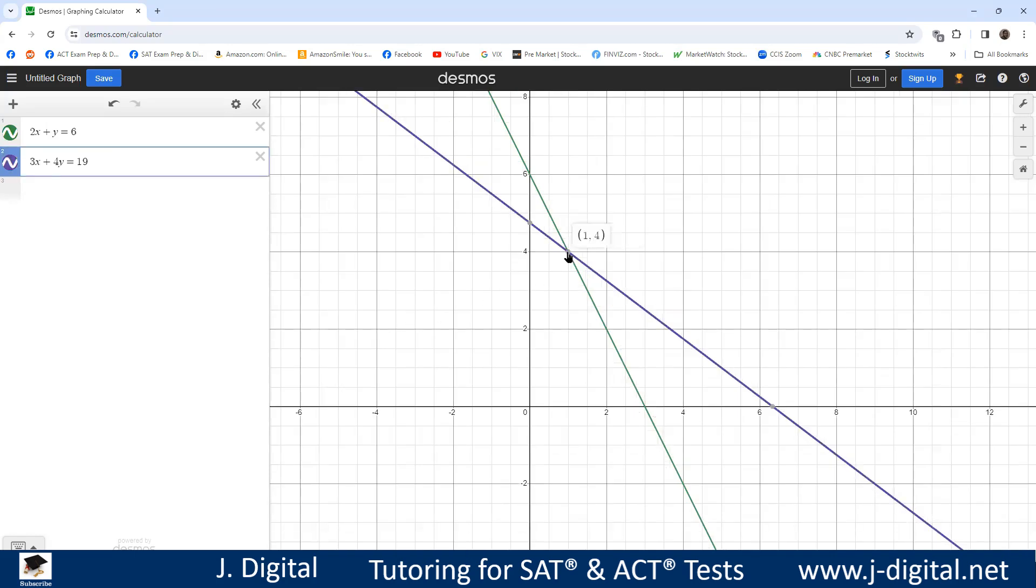Put your mouse cursor here and notice when you move this way, you see it's purple, but where it's gray is where they both meet. So it meets at the point 1 comma 4. Your x value is 1, y value is 4.